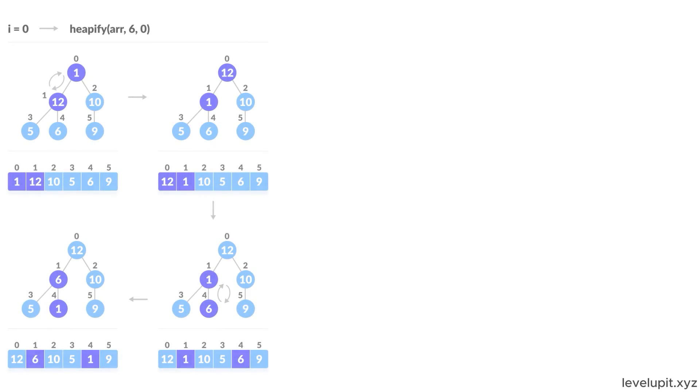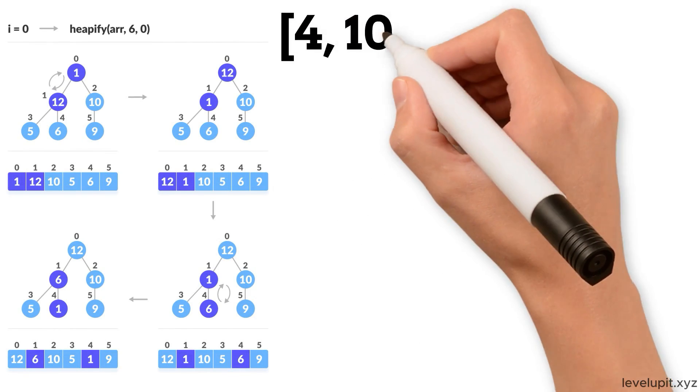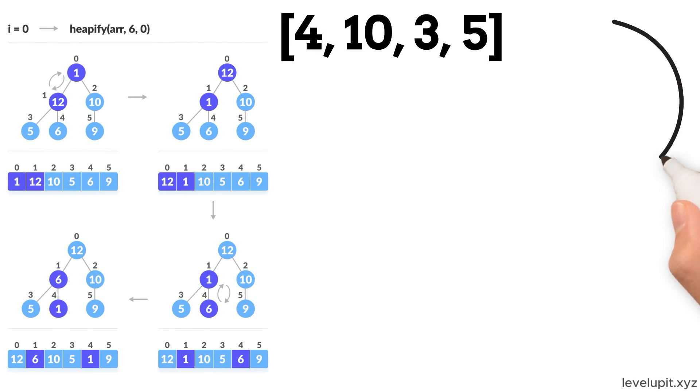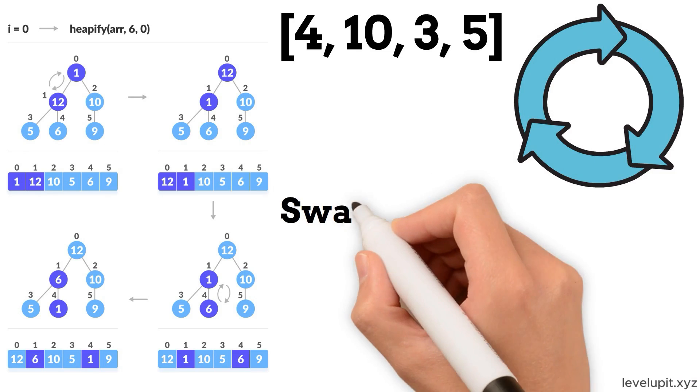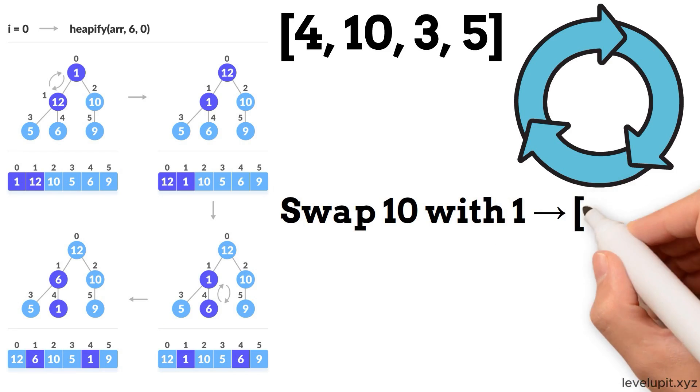Heapsort uses a heap, which you can picture as a tree that always keeps the largest item at the top. From 4, 10, 3, 5, 1, we first build a max heap with 10 at the top. Then we repeatedly swap the top with the last element and shrink the heap. Swap 10 with 1 to get 4, 1, 3, 5. Rebuild heap to move the next largest to the top, now 5.